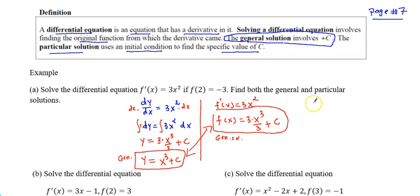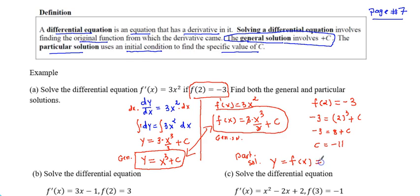What is a particular solution? Particular solution, you are given a condition that f(2) is negative 3. You have to use this to find the C. So that means -3 is equal to 2³ plus C. I can simplify this if I want. So -3 is 8 plus C. C is -11 and my particular solution is y is equal to, which you can also say f(x) is equal to x³ - 11. This is my particular solution.